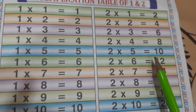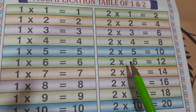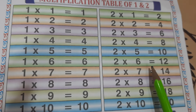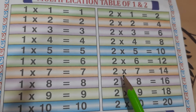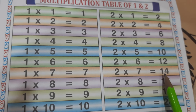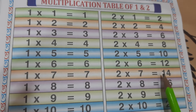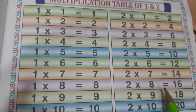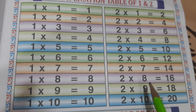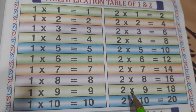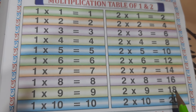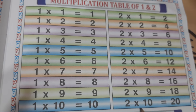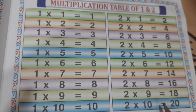2 5s are 10. 2 6s are 12. 2 7s are 14. 2 8s are 16. 2 9s are 18. 2 10s are 20.